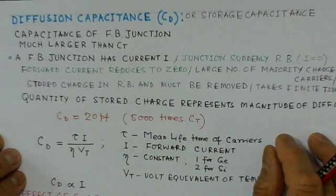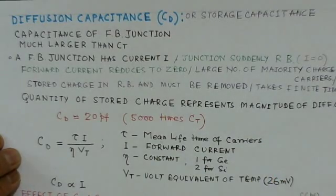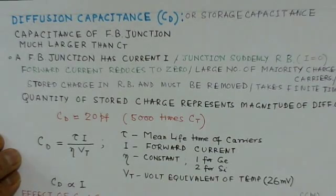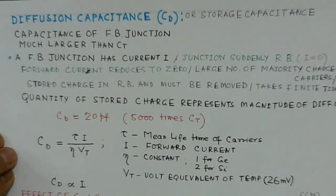And this leads to charge storage in the PN junction, and the removal of this stored charge takes some time, and this removal of space charge, which takes some time, it gives rise to a capacitance effect, which we call a space diffusion capacitance.